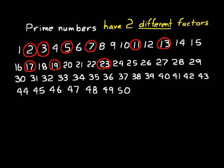Continuing through the list: 24, 25, 26 — 26 is even so 2 is a factor, not prime. 27 is not prime — it has factors 1, 3, 9, and 27. 29 is prime: add the digits, 2 plus 9 is 11, so it's not divisible by 3 or 9. 31 is prime. 37 is prime. 41 and 43 are prime. 47 is prime. 49 is not prime — 7 times 7 and 1 times 49 give three different factors.